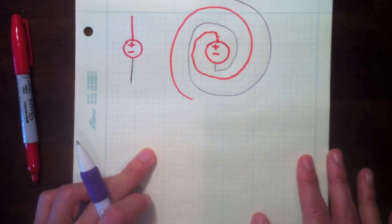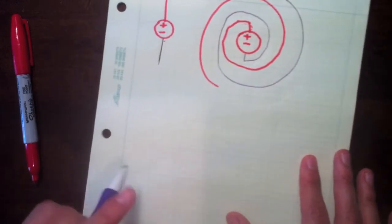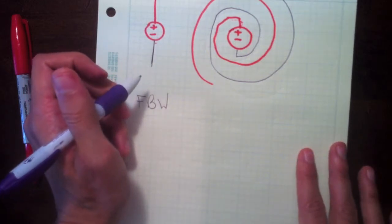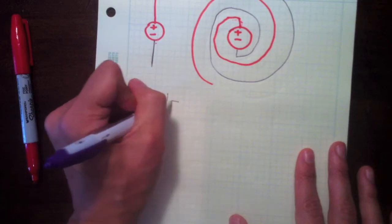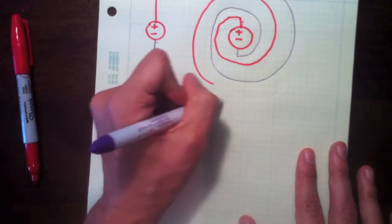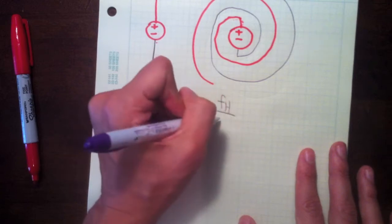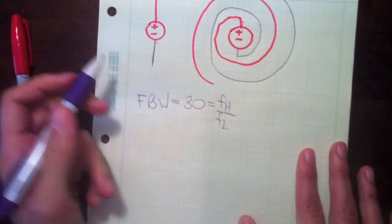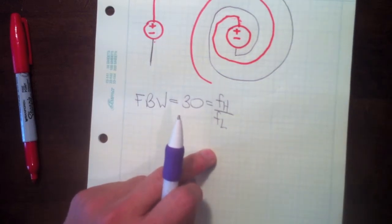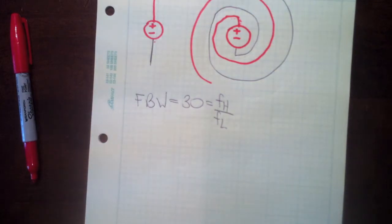One property is very wide bandwidth. For instance, the fractional bandwidth can be up to 40 to 1, 10 to 1 is very typical, but you can easily end up with 30, which is the ratio of the highest frequency that the spiral works at to the lowest frequency. For instance, if the lowest frequency is 1 gigahertz, this spiral antenna will be in band all the way up to 30 gigahertz, and that's very useful.